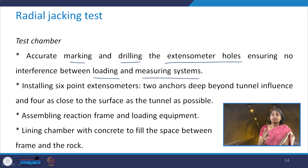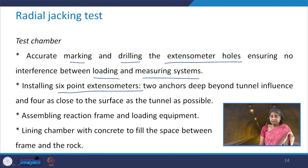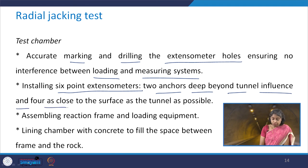If this is not done properly, the loading will influence the measurement system with respect to displacement and give erroneous results. One needs to install 6-point extensometers where 2 anchors should be deep beyond the tunnel influence and 4 should be as close to the tunnel surface as possible.